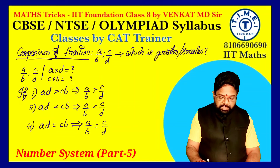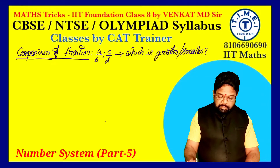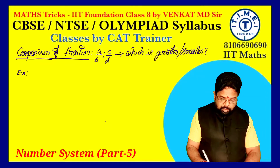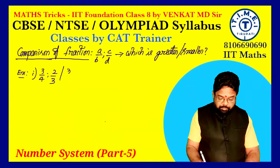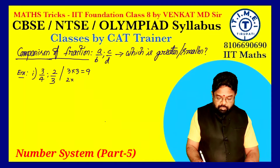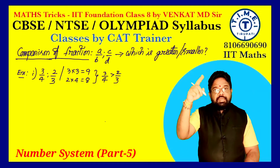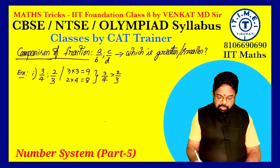Observe the example for better understanding. Take the simple example: 3/4 and 2/3 — which is greater? Do cross multiplication: 3×3 = 9, and 2×4 = 8. Since 9 is greater than 8, we say 3/4 is greater than 2/3 according to our logic.